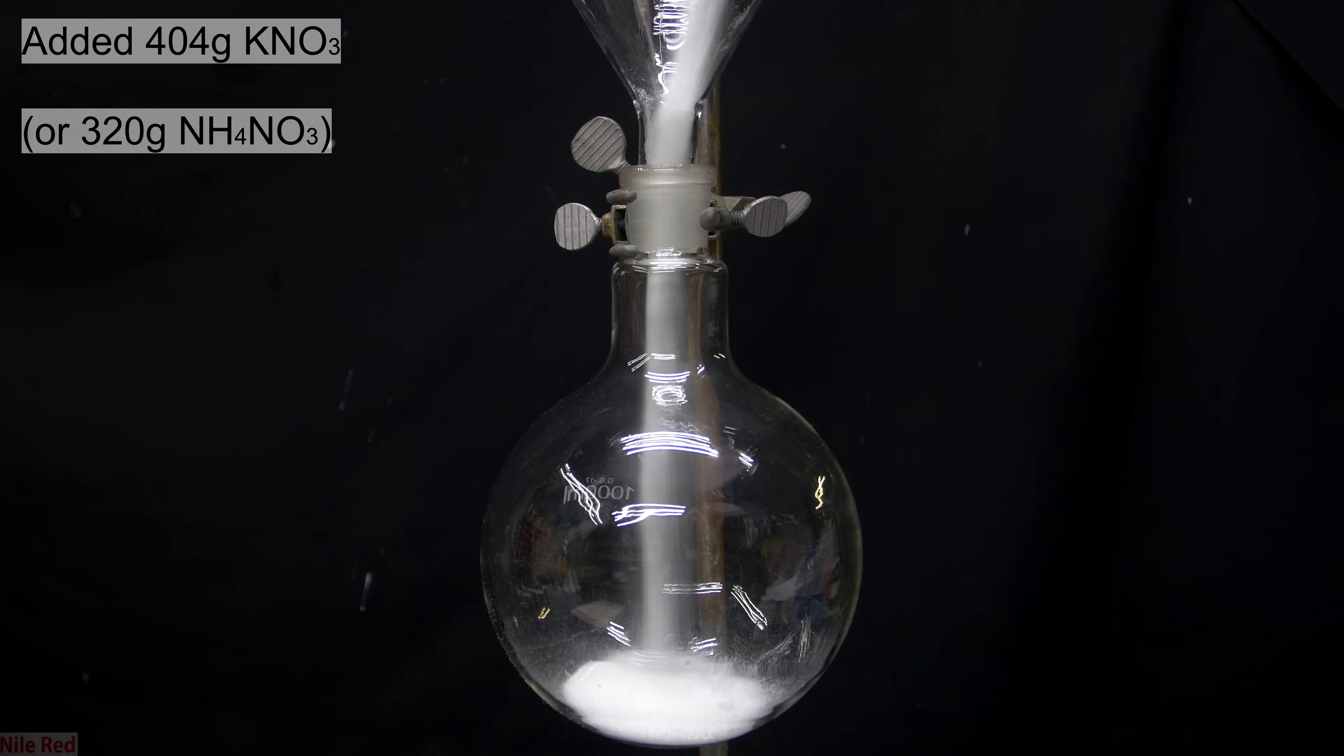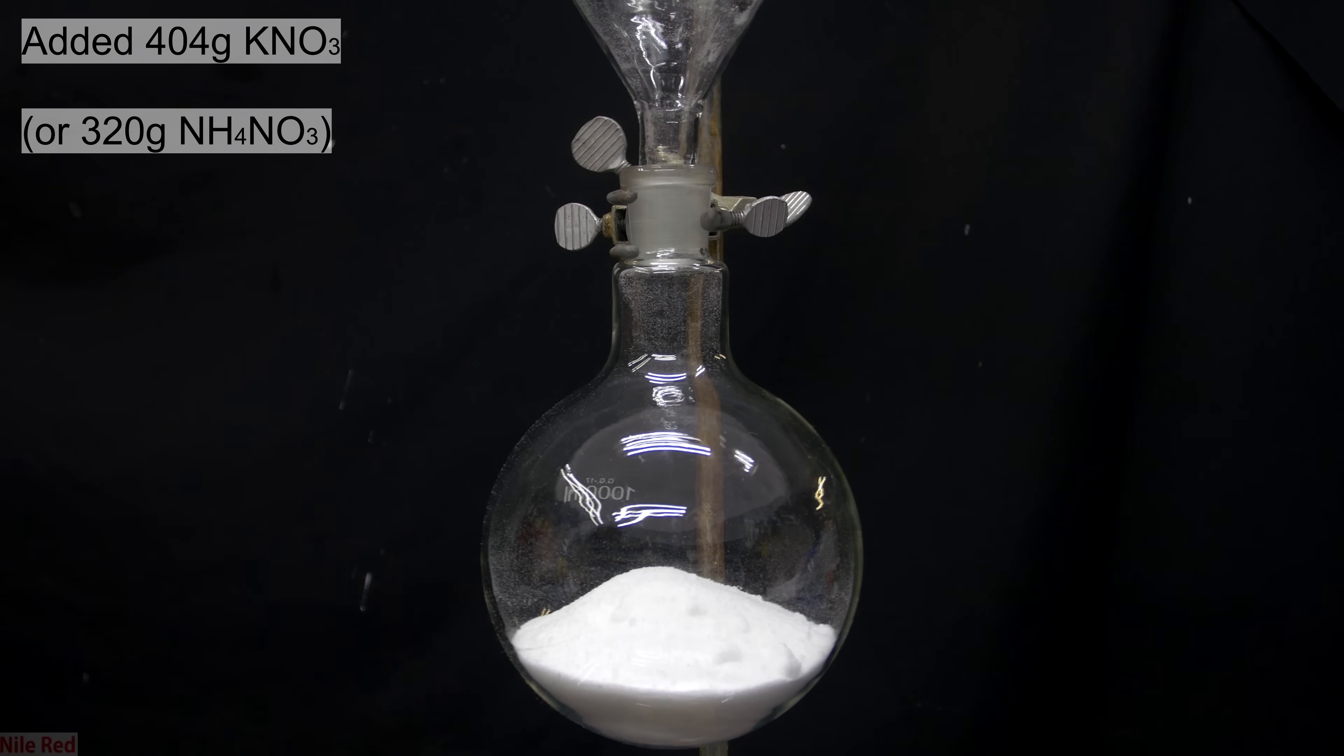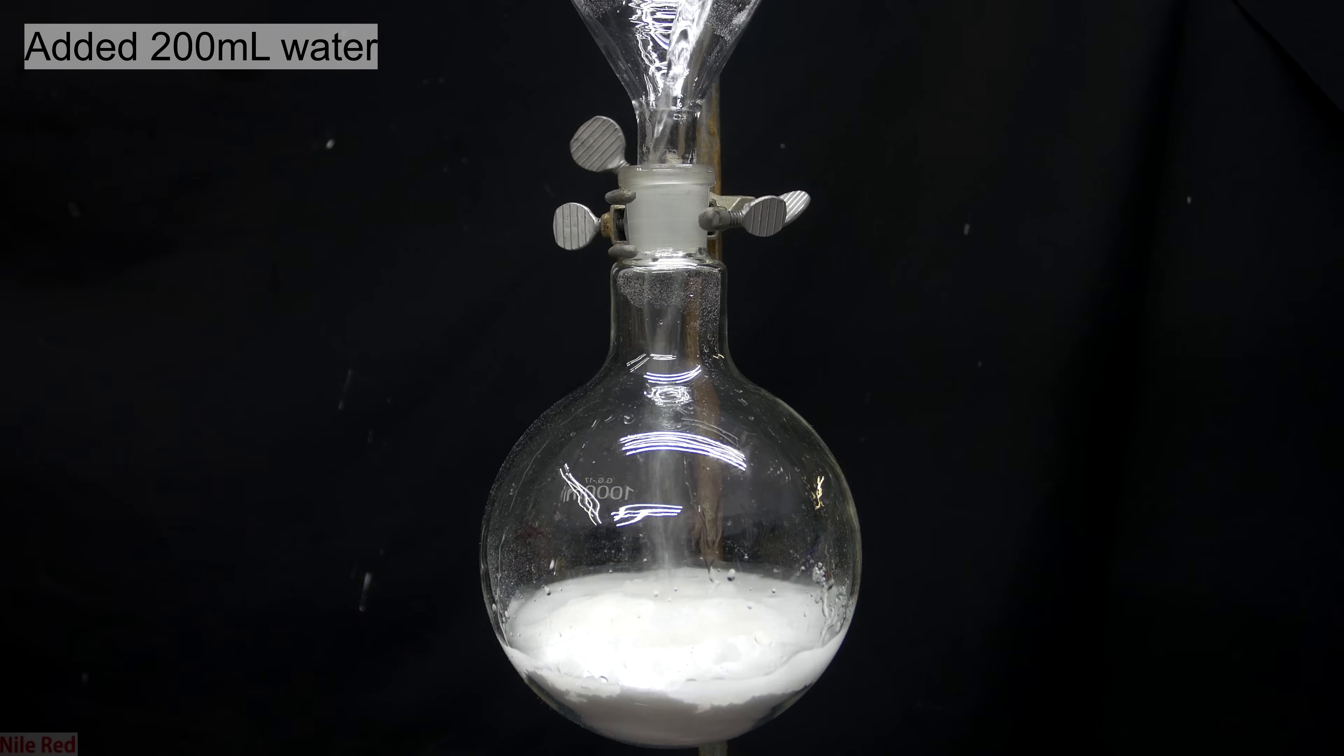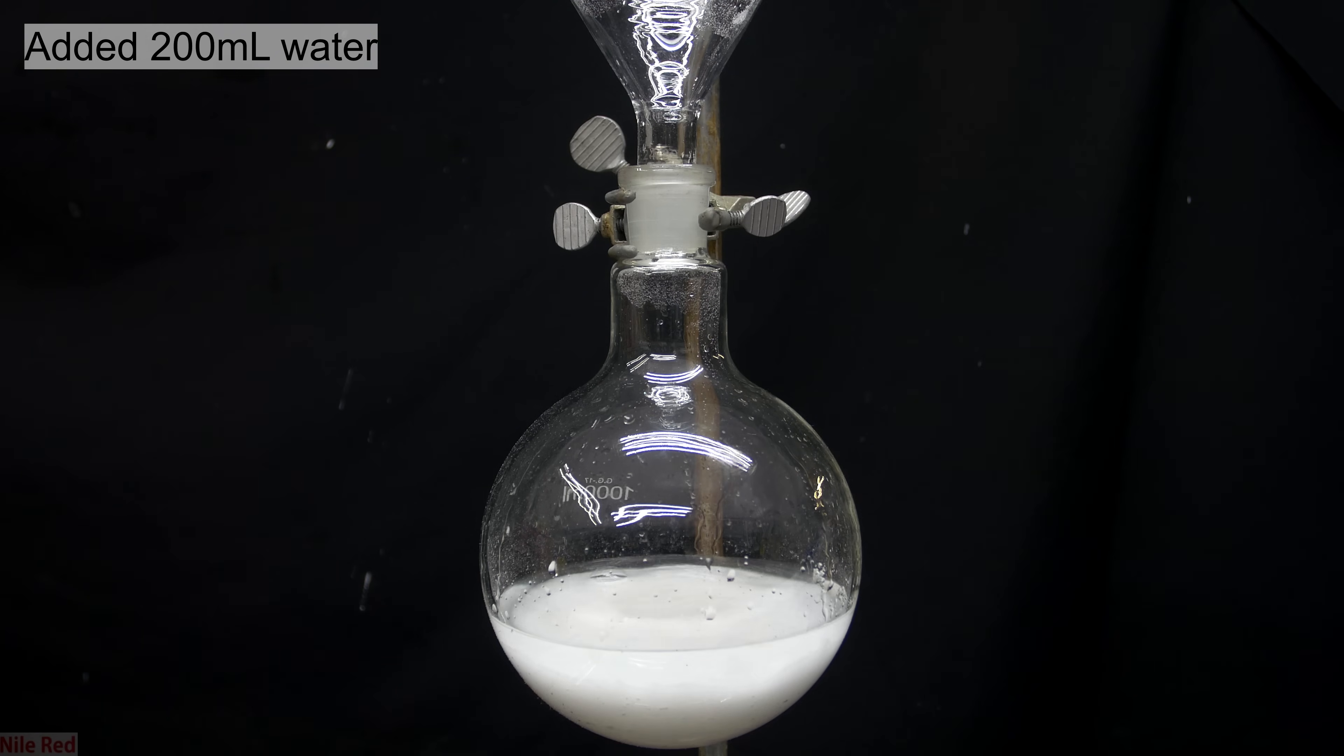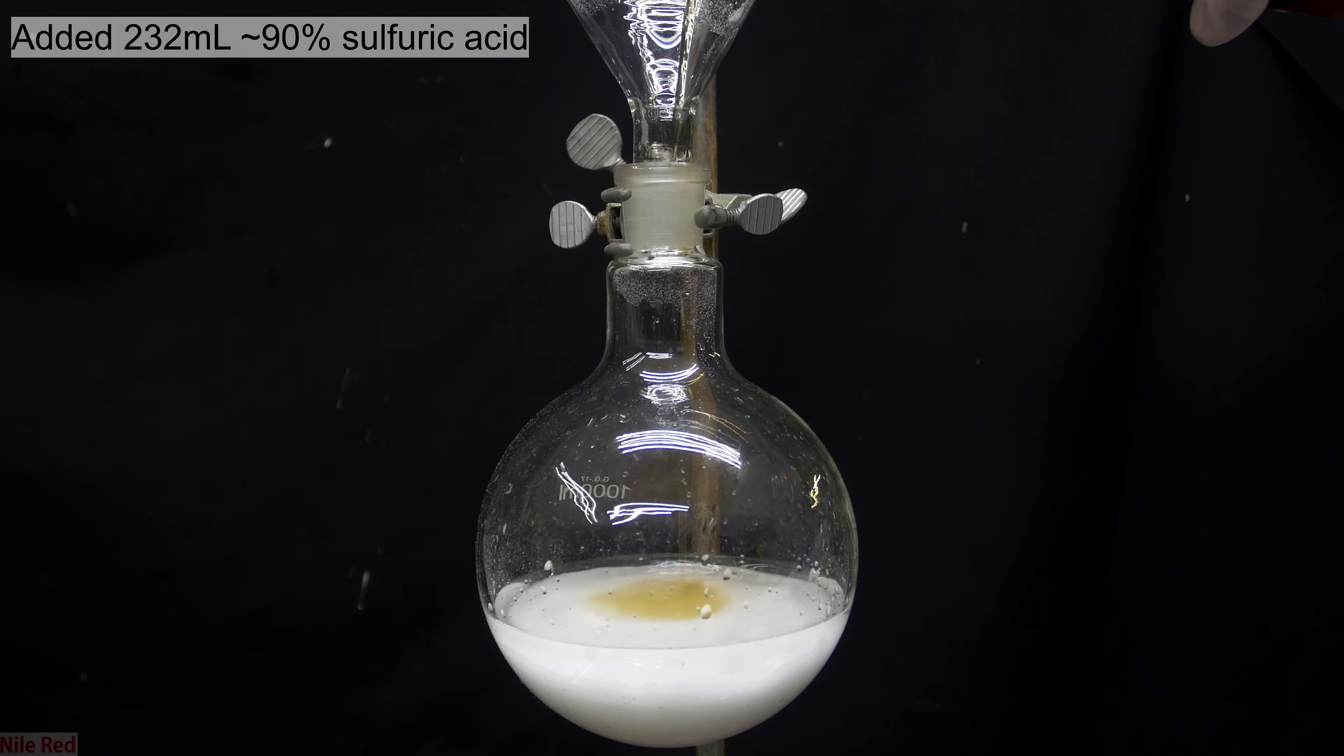I start off by adding 404 grams of potassium nitrate to a 1 liter round bottom flask. On top of this I added in about 200 milliliters of distilled water. With the water added, I slowly pour in 232 milliliters of our sulfuric acid drain cleaner.